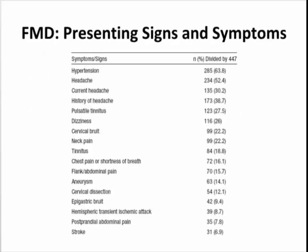Looking at presenting signs and symptoms from the largest cohort of FMD patients, hypertension is the most common, since the renal arteries are most commonly involved. For cerebrovascular involvement, about half the patients will have headaches on presentation, along with pulsatile tinnitus and dizziness. Notably, stroke is way down at the bottom — TIAs and strokes are actually uncommon due to fibromuscular dysplasia. So you are much more worried about controlling hypertension long-term, with less concern that cerebrovascular involvement will progress to stroke.